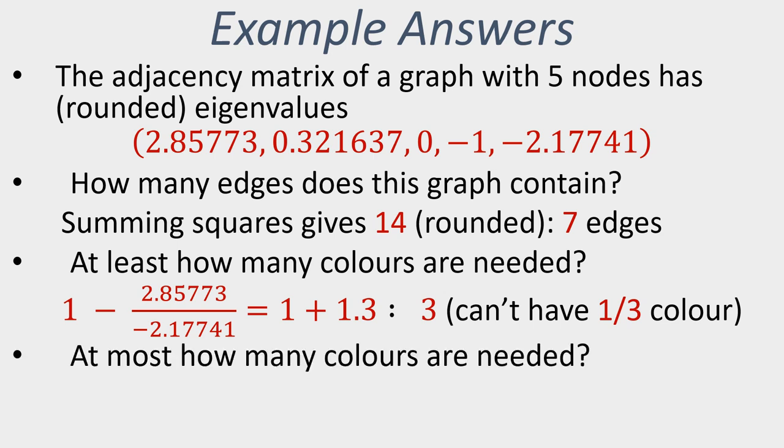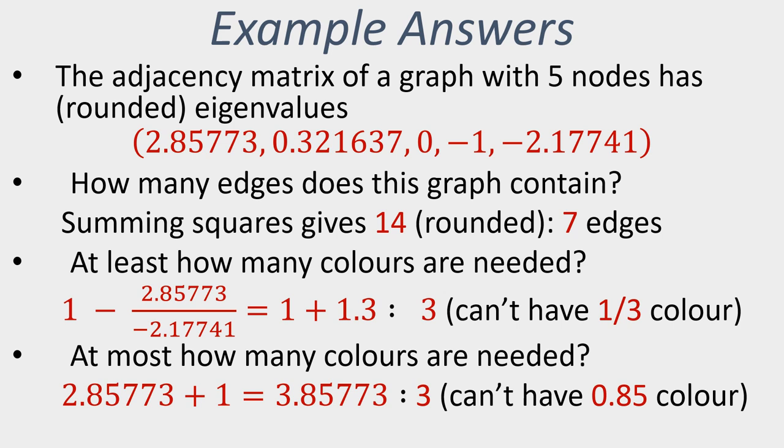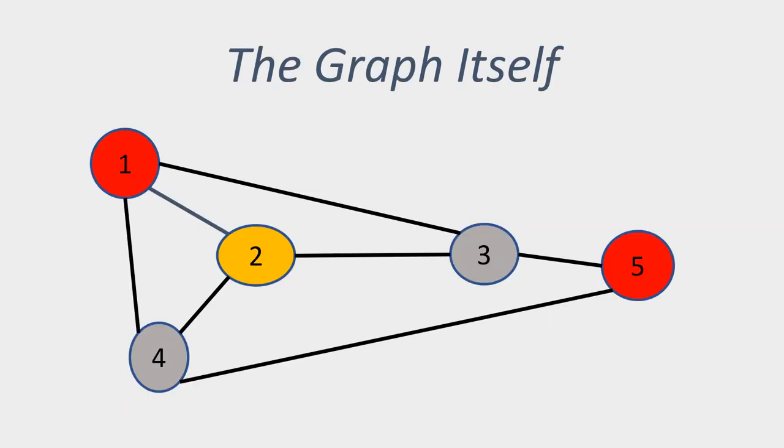What about the upper bound, the maximum number of colours? It's 1 plus the largest eigenvalue. This is the largest eigenvalue; we add 1 to that, we get this quantity here. Once again, we cannot have fractional colours, so that tells us we need at most 3 colours. We've already discovered we need at least 3 colours, so we have an exact bound on our chromatic number for this particular graph.